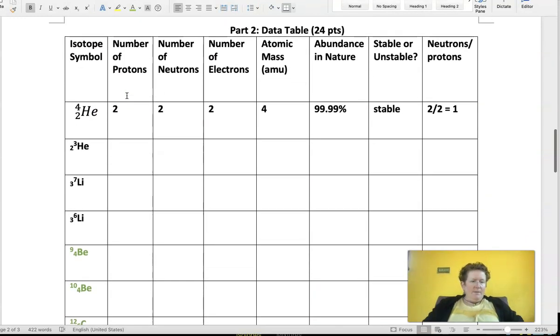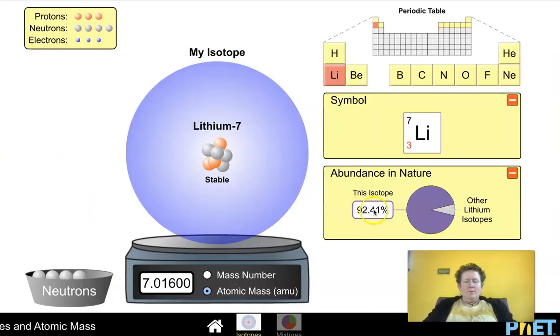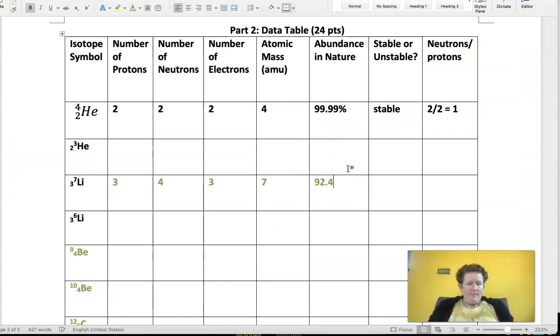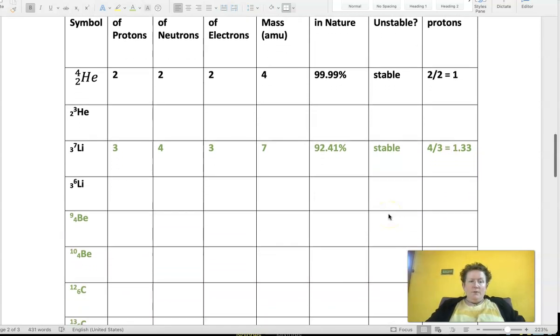If we have lithium 7, that's 7 minus 3 equals 4 neutrons. The electrons are the same as the protons if it's a neutral atom, in other words it doesn't have a charge. The atomic mass is 7. The abundance in nature is down here in this lower right-hand box, 92.4%. We know it's stable, and then we took the number of neutrons divided by the number of protons. That's 4 divided by 3, and that ratio is 1.33.